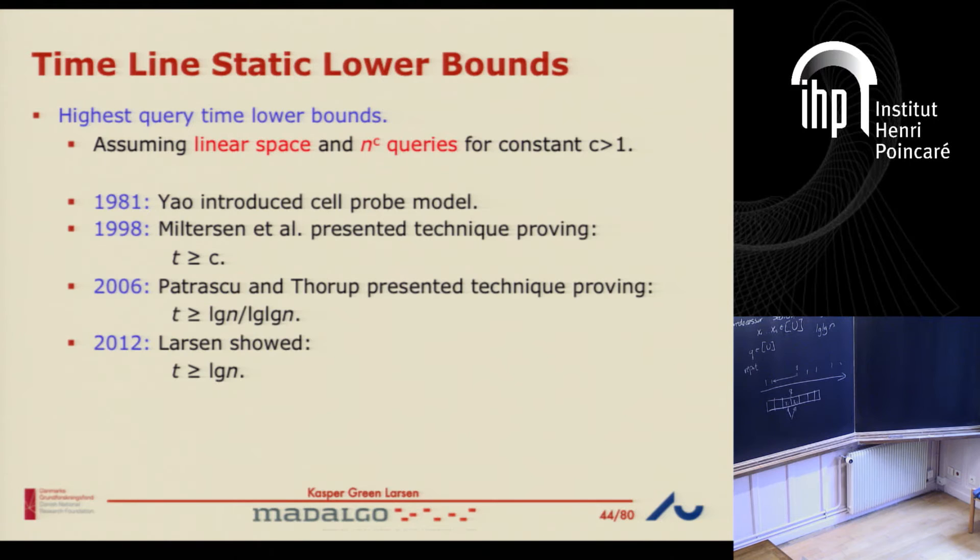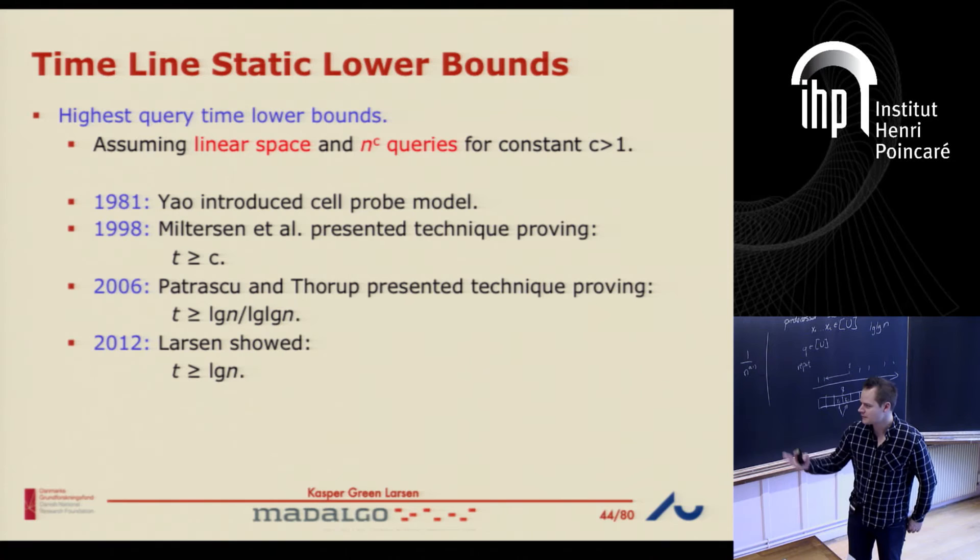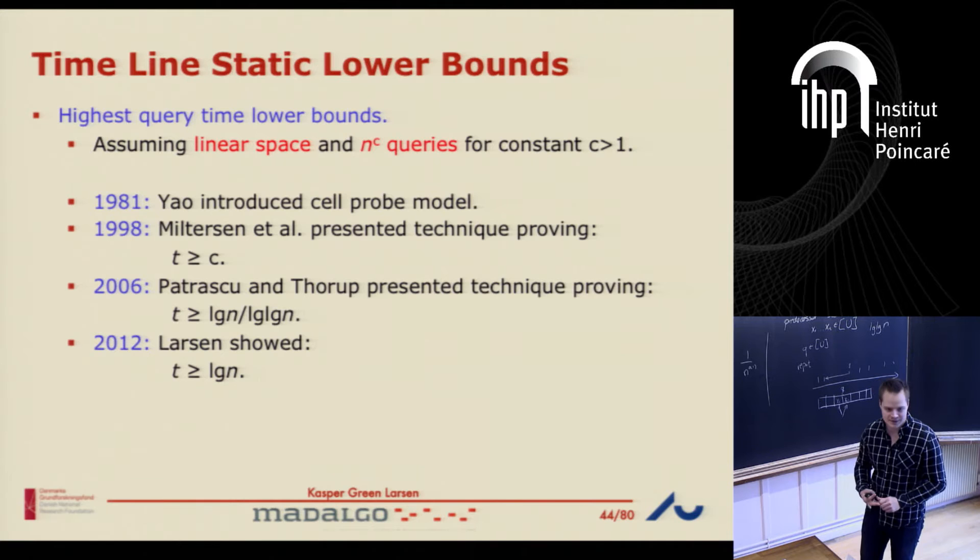That's the timeline of these static lower bounds, and this is where we are. The lower bounds are tight for some problems — you can get the right lower bounds. Of course, there are many problems where we expect the query time to be like root n or something like this, so it's definitely not the right answer for all problems. But this is where we're stuck — there's a long way to go.